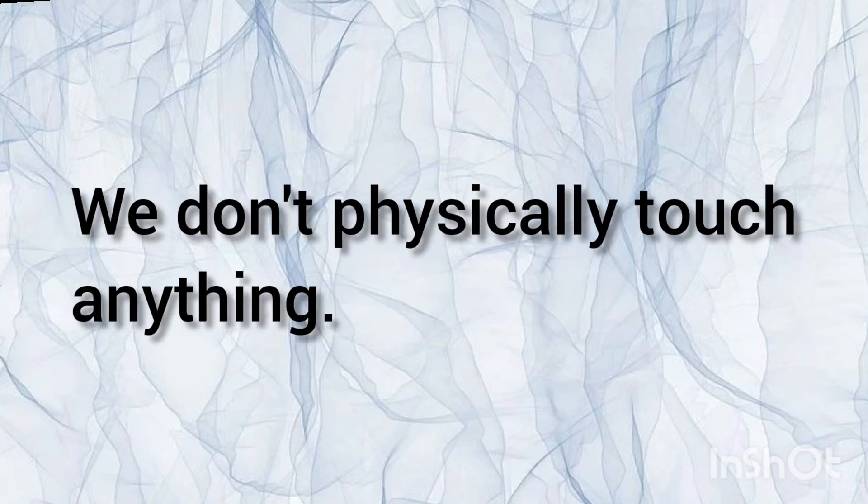Next fact: We can see any physical object, but we don't actually touch it. Objects are made of atoms with a nucleus and electrons. A basic principle is that like charges repel each other. The electrons in our atoms repel the electrons in other objects, so we feel a force but don't physically touch objects.